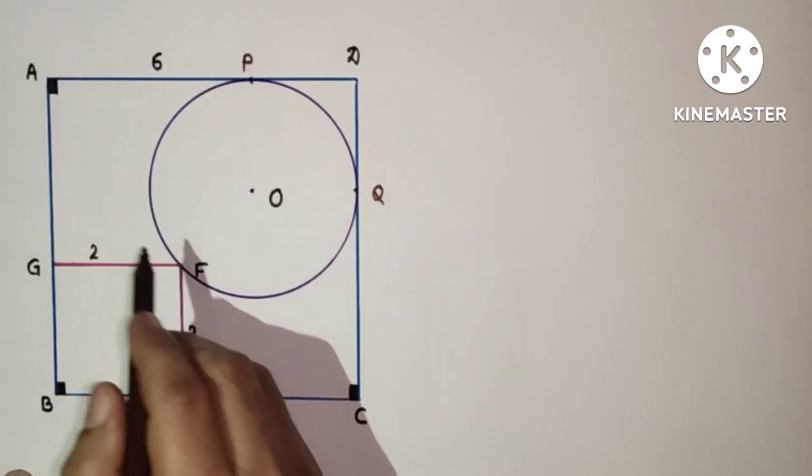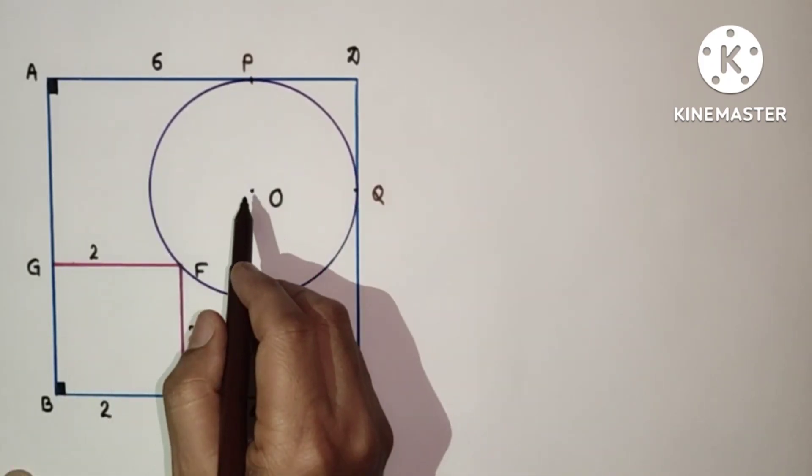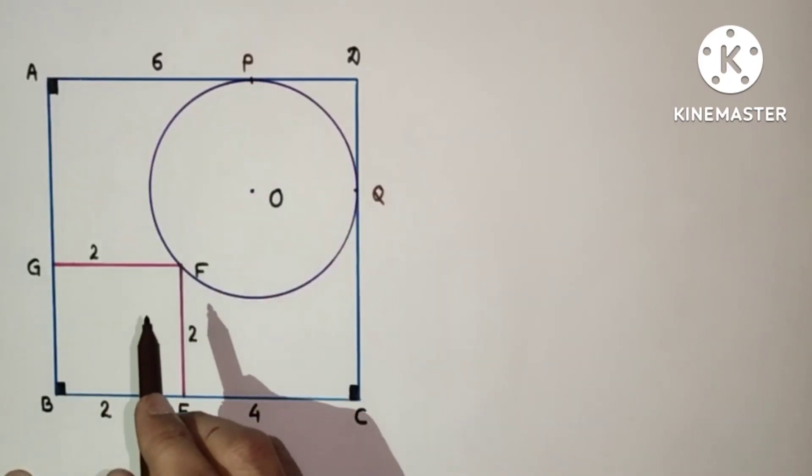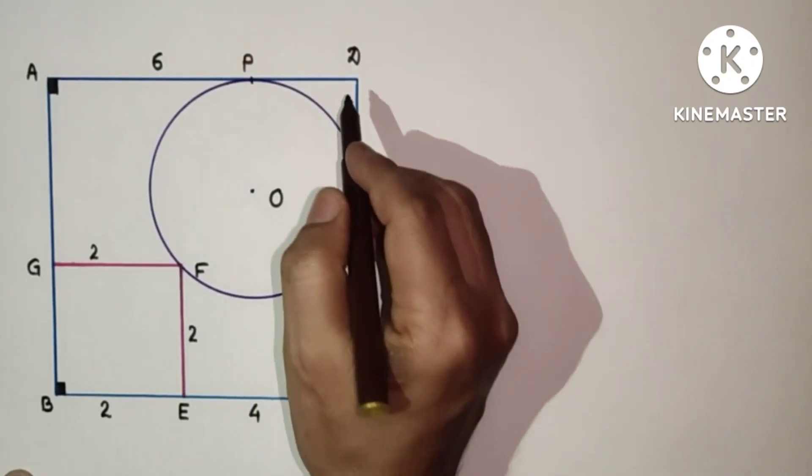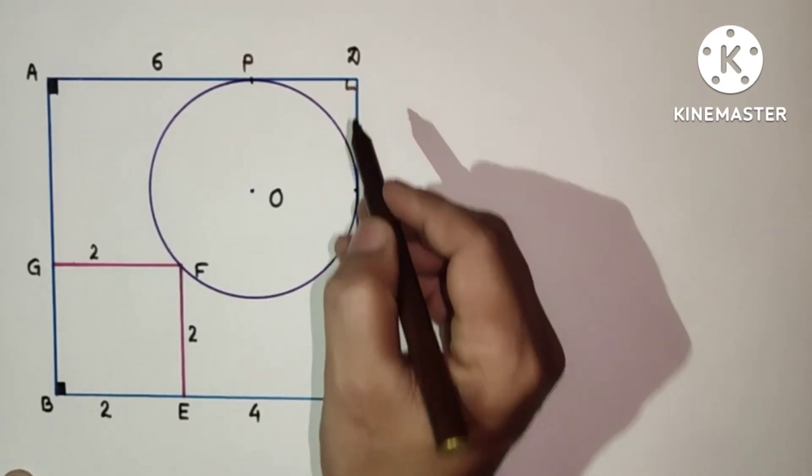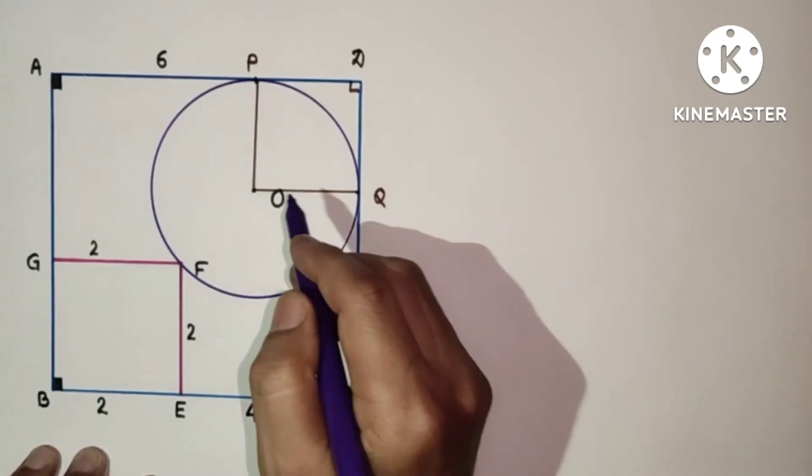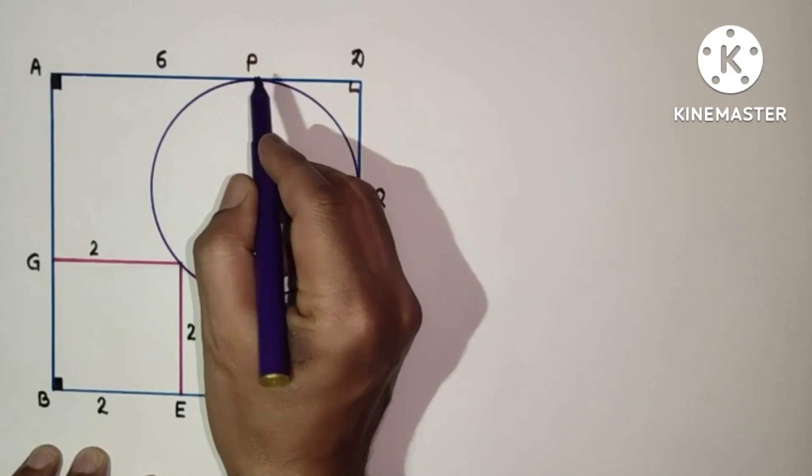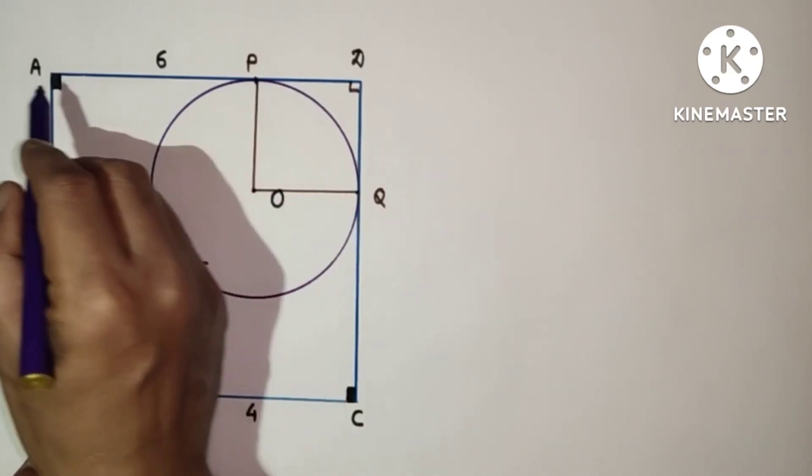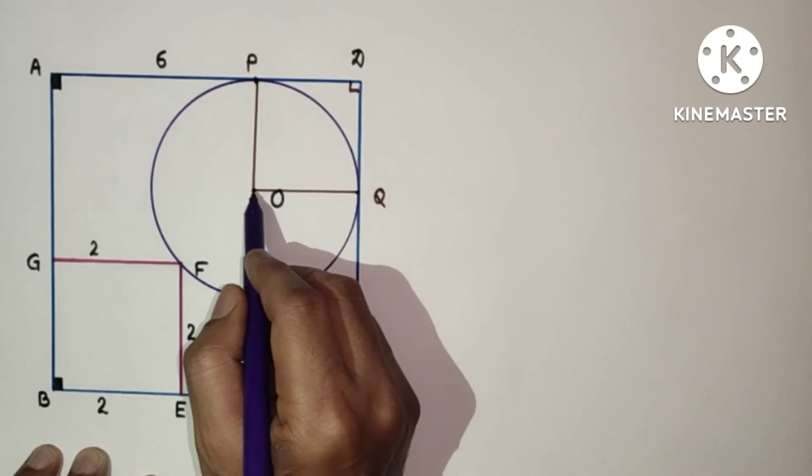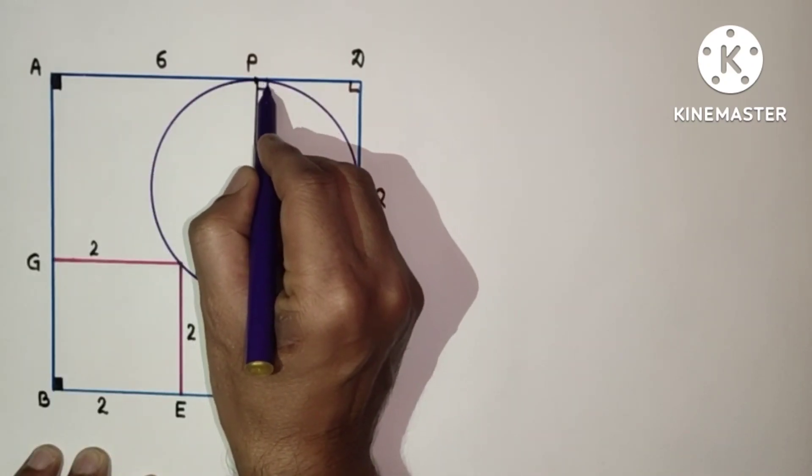If we join OP and OQ, so OP will be perpendicular to AD and OQ will be perpendicular to DC. And this is 90. So POQD will be another square. This is the point of contact and from the center to the point of contact, and this AD is tangent. This radius and tangent will be perpendicular.